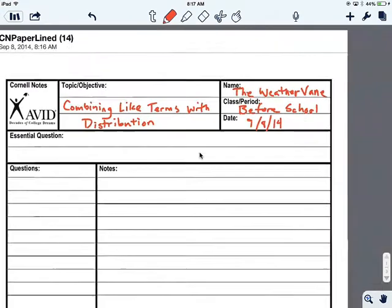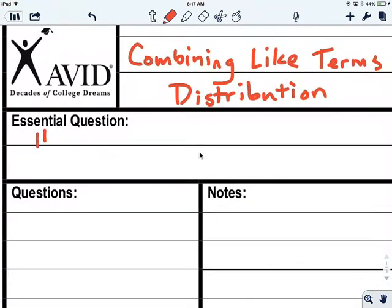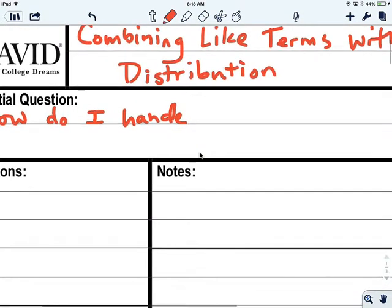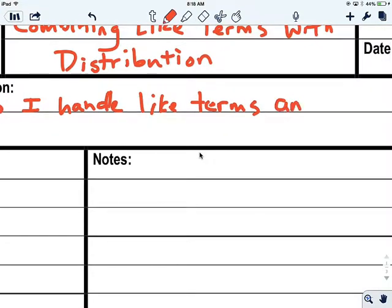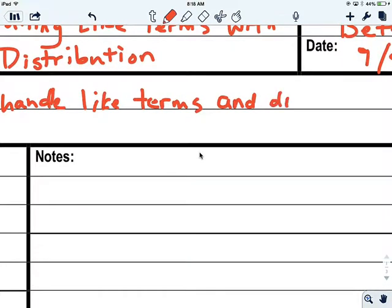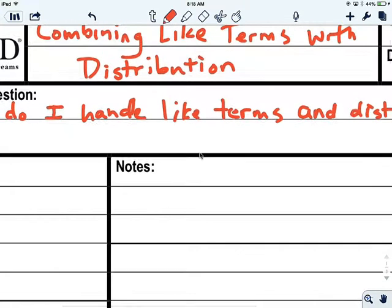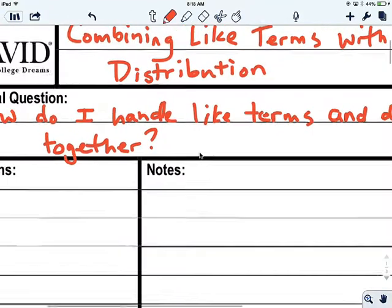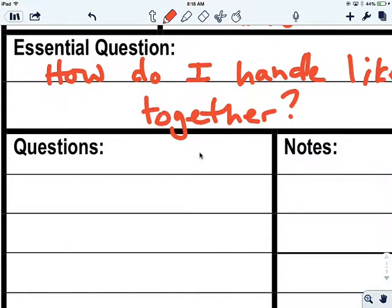So our central question here is how do I handle like terms and distribution together? And so my first question is, what should I do first?